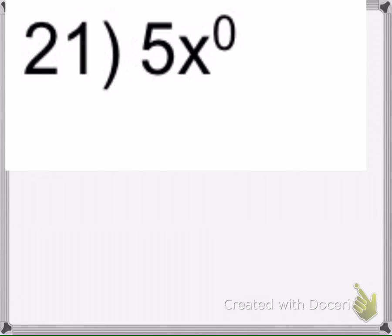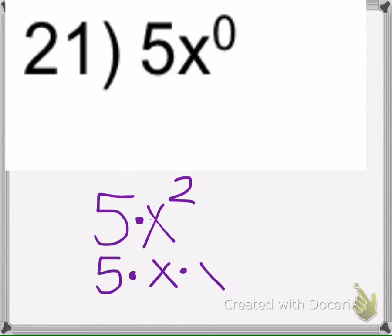Okay, so an exponent only goes with, like if we have this, a 5 next to an x means multiply, and then x squared looks like this. So this exponent here only goes with the base that's immediately to the left. So in this problem here,